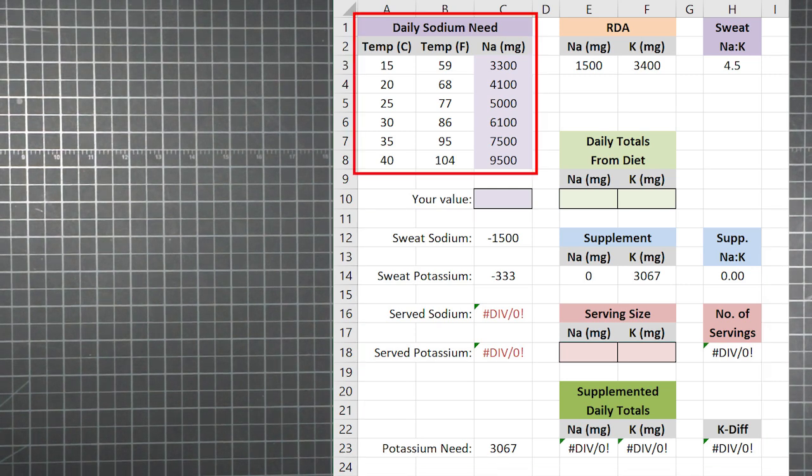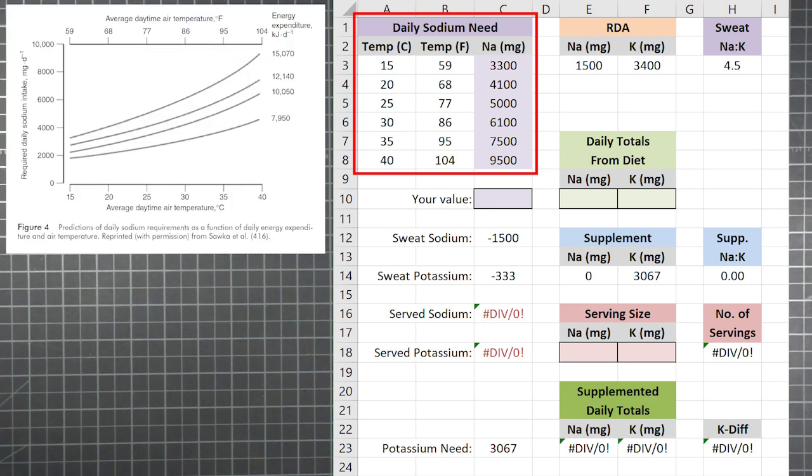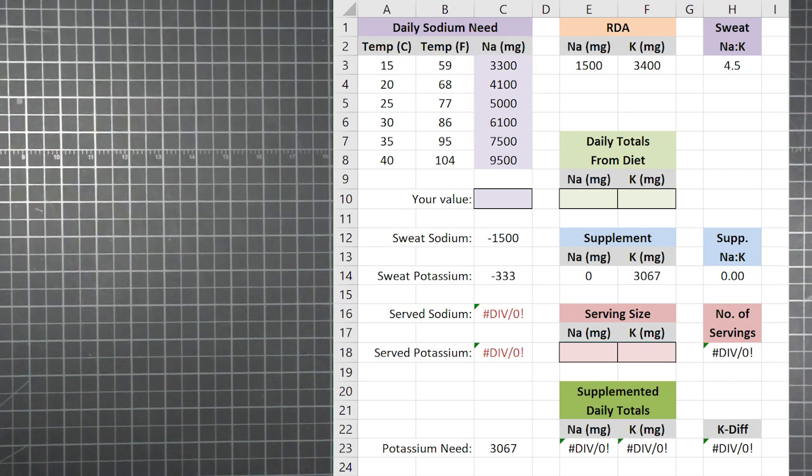This table in the upper left is just the data from the sodium needs graph digitized. Because 3600 calories is a realistic estimate for a full day's hiking, I use the numbers from this top curve. None of these fields are locked by the way. If you want to replace this column with the numbers for any of the other curves, go right ahead. The table isn't linked to any formulas. You enter the value desired in the shaded box below.